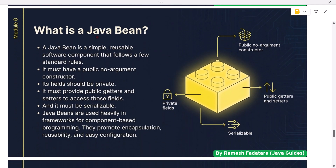What is a Java Bean? A Java Bean is a simple reusable software component that follows a few standard rules: it must have a public no-argument constructor, its fields should be private, it must provide public getters and setters to access those fields, and it must be serializable. Java Beans are used heavily in frameworks like Spring, JSP, and Java EE for component-based programming.